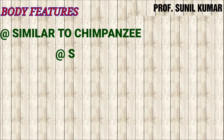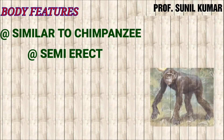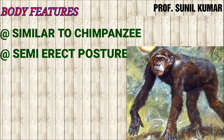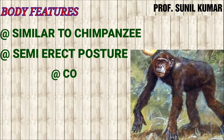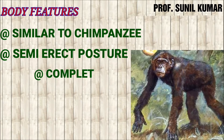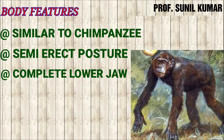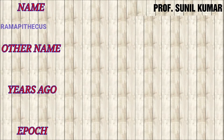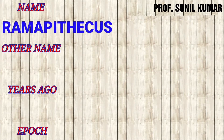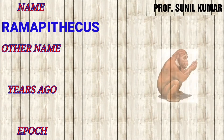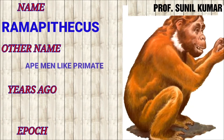The cranial capacity of Dryopithecus is not known. Body features: they were similar to chimpanzees, had a semi-erect posture, could sometimes walk upright, but most of the time were quadrupedal. They had a complete lower jaw.